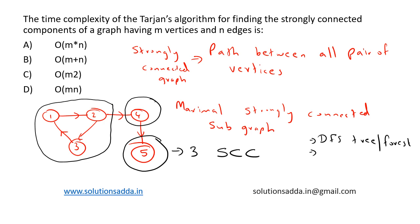we can store or print all the nodes in that subtree, and that will be one strongly connected component. Also, there is no back edge from one strongly connected component to another. Based on all this, Tarjan's algorithm works, and it mainly uses DFS traversal as its major component.